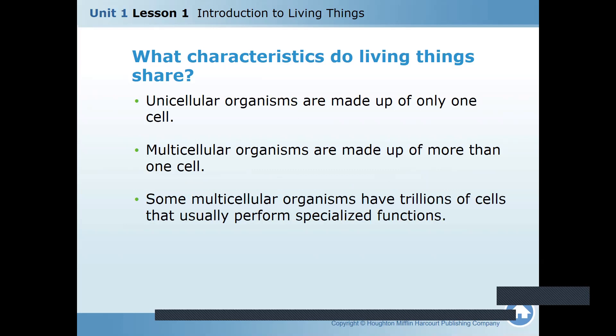Unicellular organisms are made up of one cell. What is the other name of unicellular organism? Prokaryote or eukaryote? Prokaryotes are unicellular organisms made up of one cell. Multicellular organisms are made up of one or more cells, also called eukaryotes. Like us — we have trillions of cells and each of them has their own function.